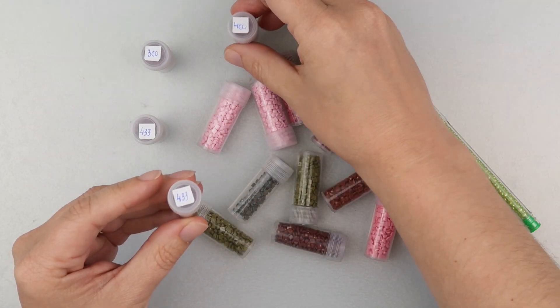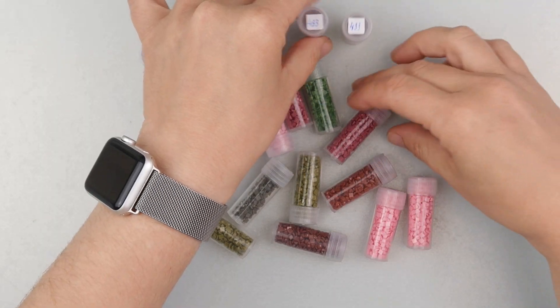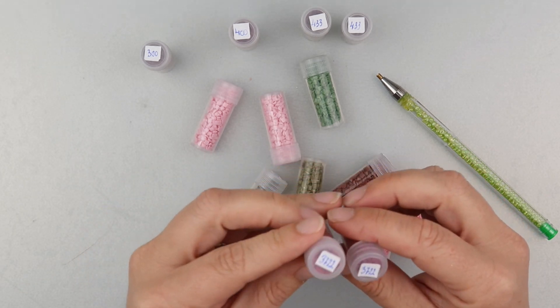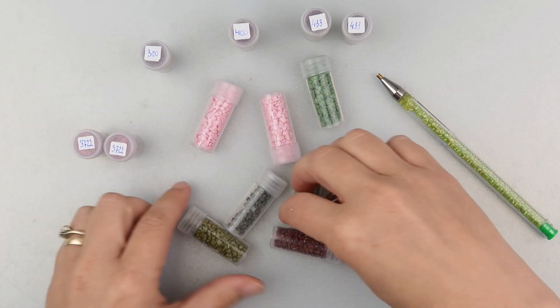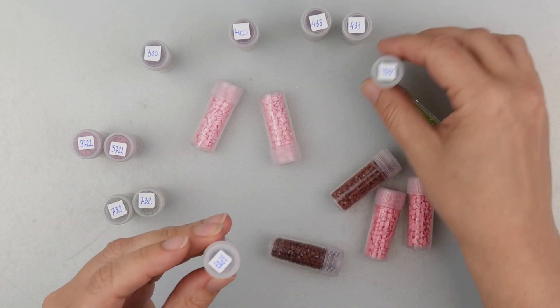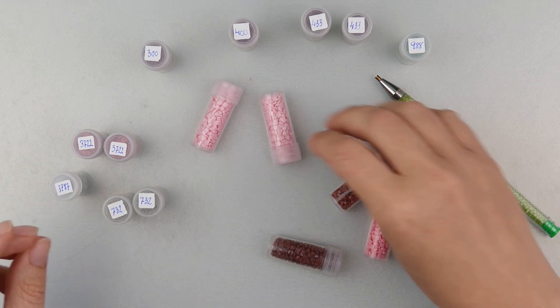So we've got some 300s which I definitely know I need, and 400s, so need 400s. And we've got some 433s, 3722, and they're both 732, 988, 378, 7. Lovely writing as well, Anika, by the way.